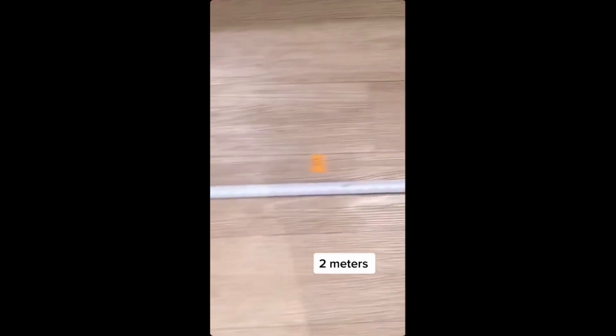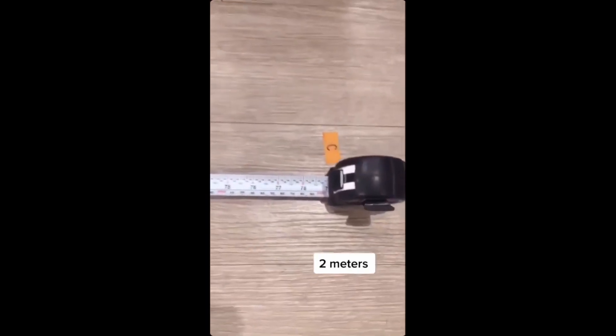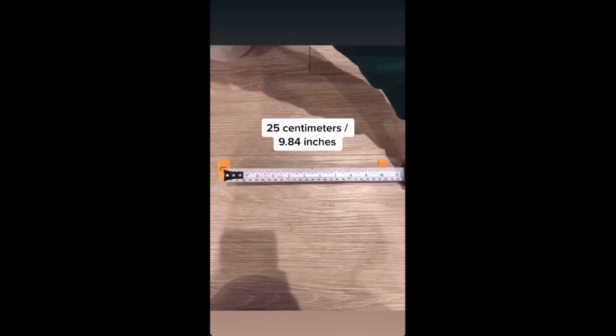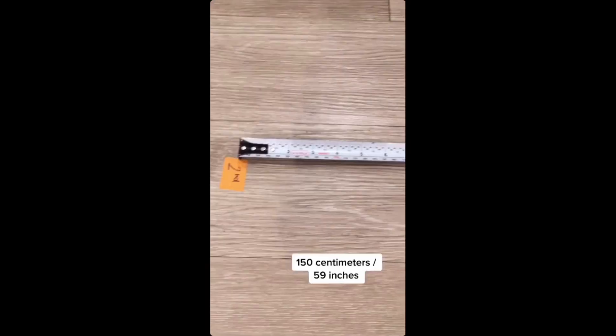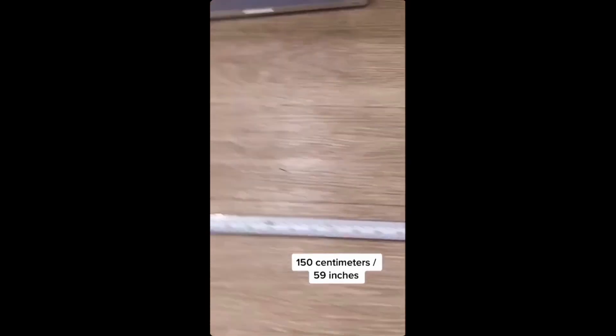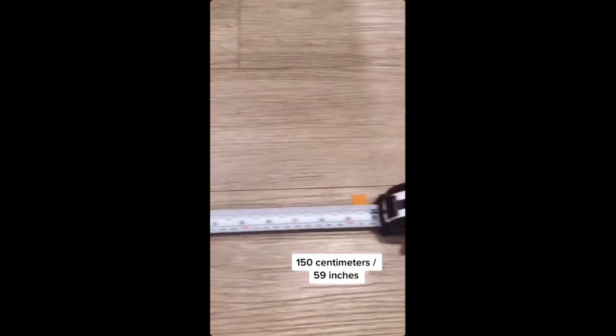This is the 2 meter line from the vehicle start zone to the center. This is our 25 centimeter line from the center. This is the second ring 50 centimeters from the center. This is our third ring 150 centimeters from the center.